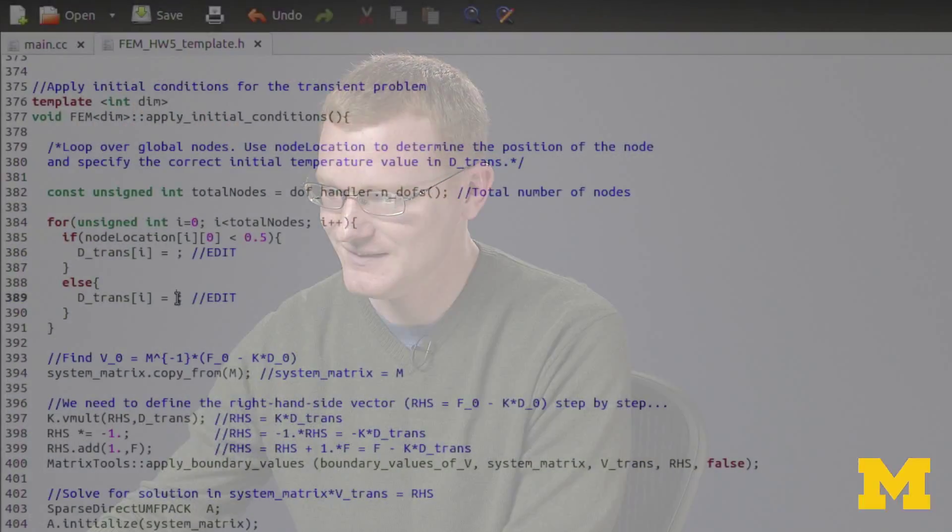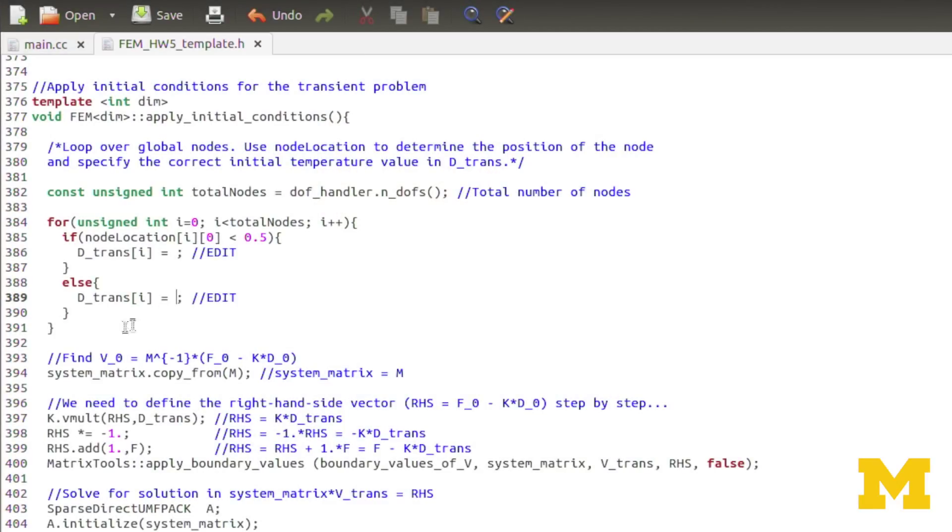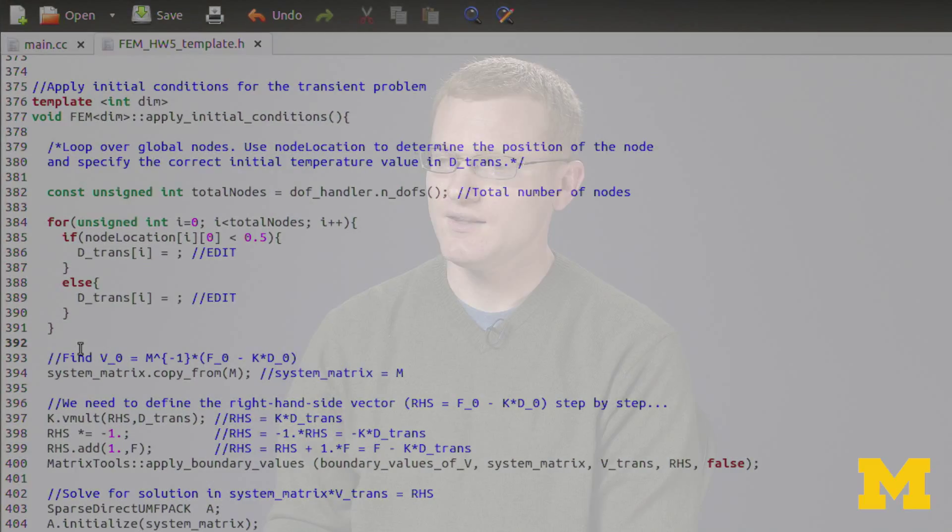Depending on the position of the node, we'll define the initial temperature at that node. Pretty straightforward, you'll just need to insert those values. In some cases, it actually depends on the x value of the node itself as a function. But all that information is given in the Homework, and you just need to calculate the value. Now that takes care of D-naught, storing the initial values of the temperature in D-trans. But now we will also need the initial values for V, we need V-naught. And so to do that, we will solve a matrix vector system.